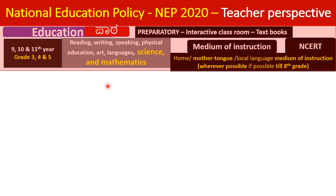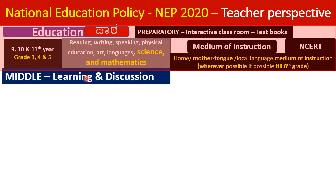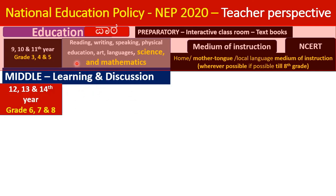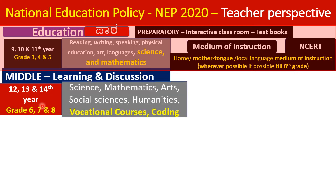At the Middle Level (Grades 6, 7, 8 — ages 12, 13, 14), learning is through discussion-based pedagogy, enhancing critical thinking. Subjects include science, mathematics, arts, social sciences, and humanities. Importantly, vocational courses and coding have been introduced as new additions to this level, with year-long educational vocational courses starting from Grade 6.